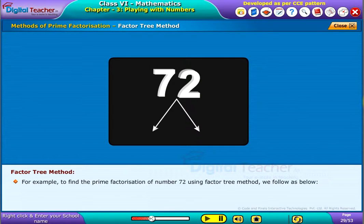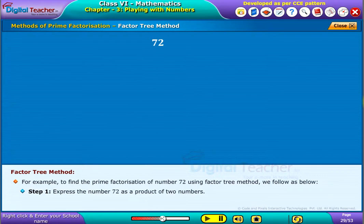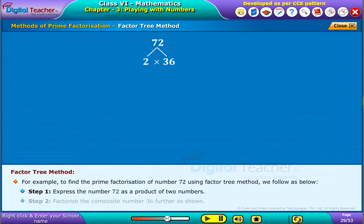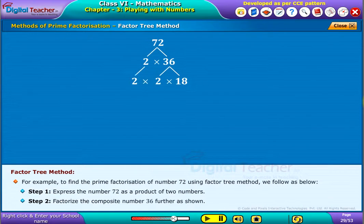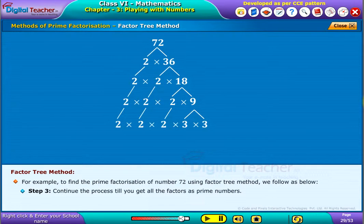For example, to find the prime factorization of number 72 using the factor tree method, we follow as below. Step 1: Express the number 72 as a product of two numbers. Step 2: Factorize the composite number 36 further as shown. Step 3: Continue the process till you get all the factors as prime numbers.